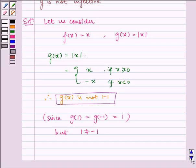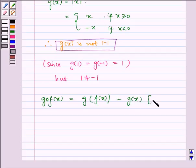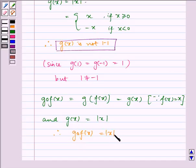Now let us find g of f of x, which is equal to g(x) because f(x) is equal to x. And g(x) equals the absolute value of x. Hence, g of f of x equals the absolute value of x.